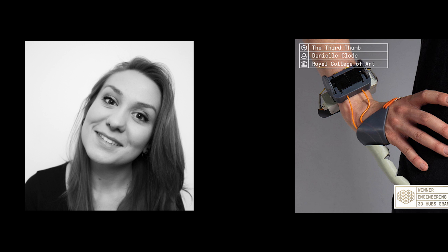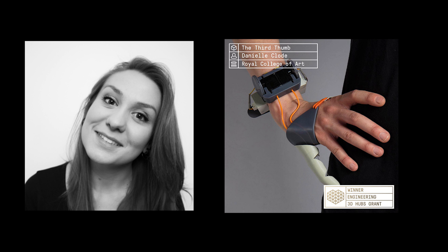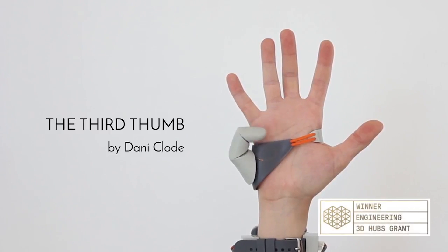From over 449 student entries, Dani Claude won the engineering category for the 3D hubs grant with her 3D printed third thumb project. The third thumb is 3D printed with flexible filament and rigid plastic from the Form 2 printer.